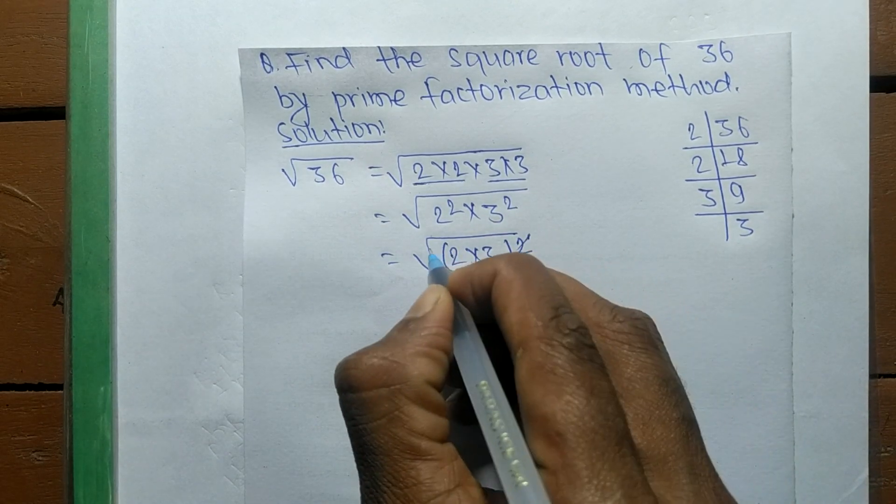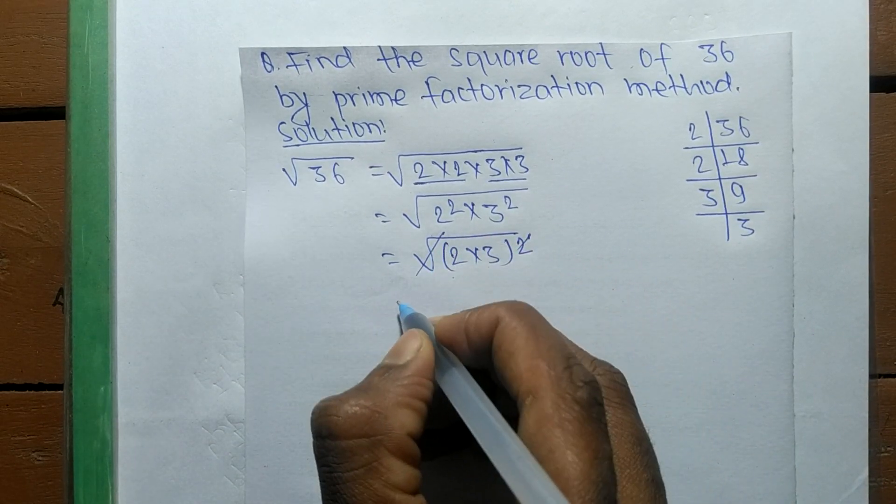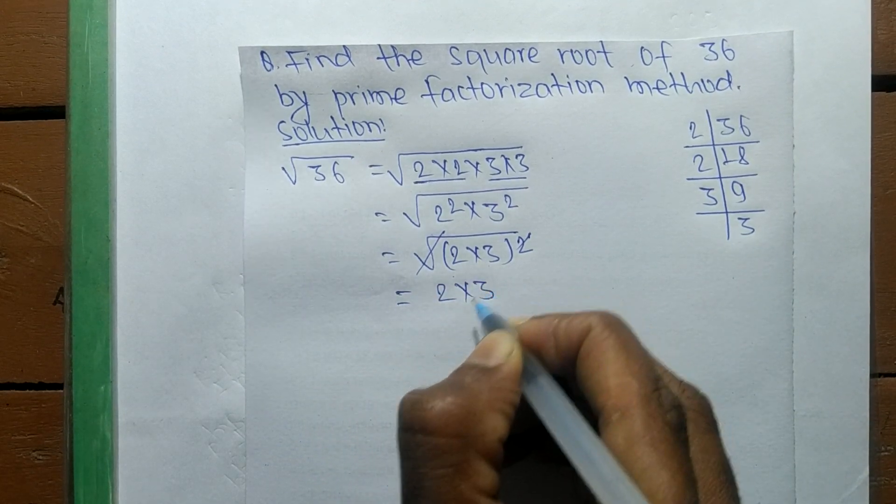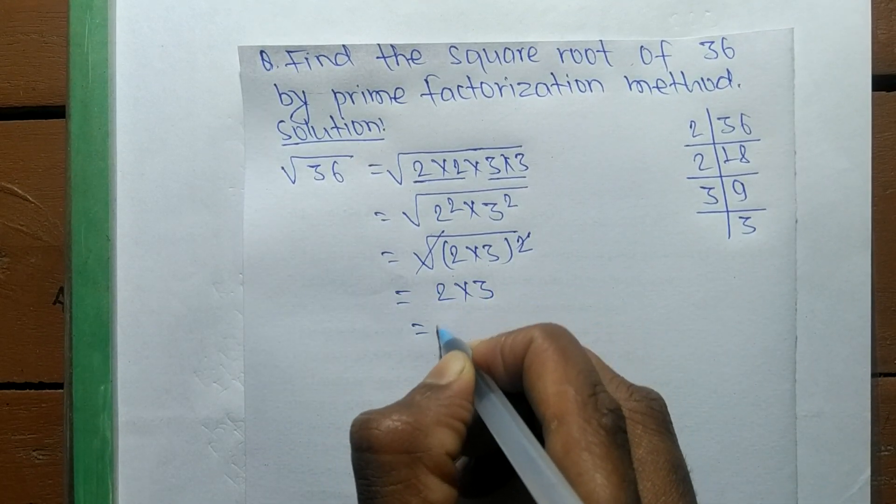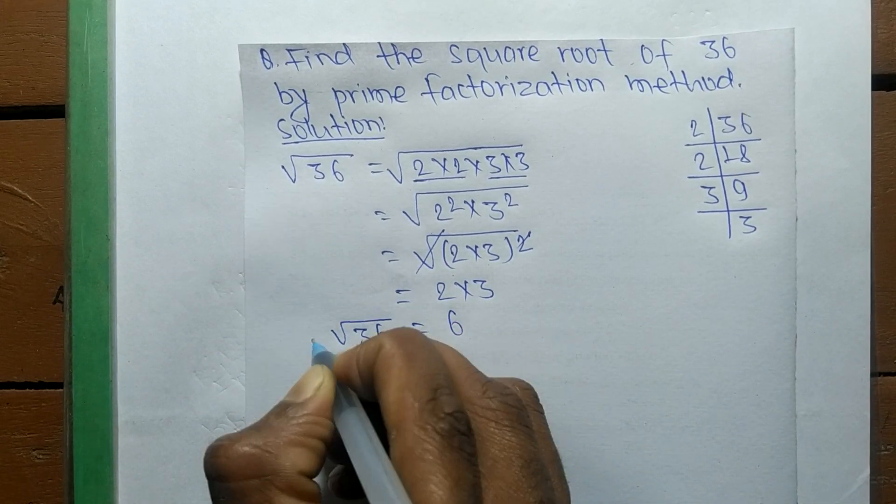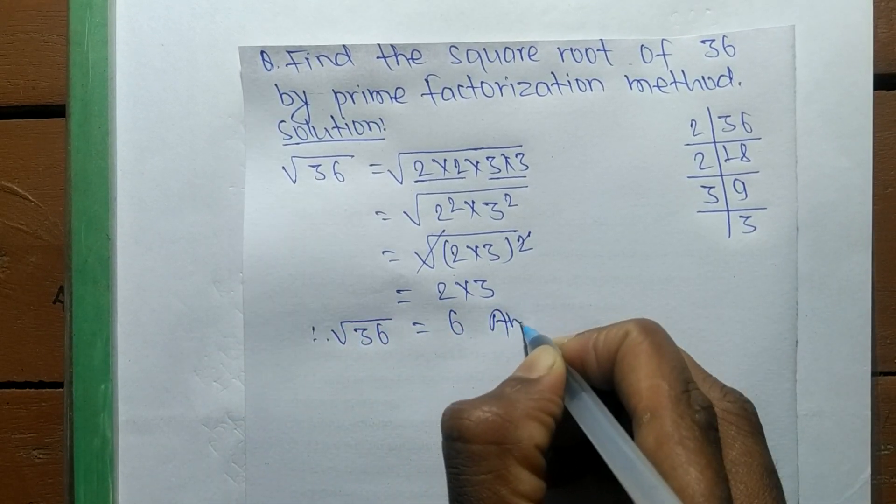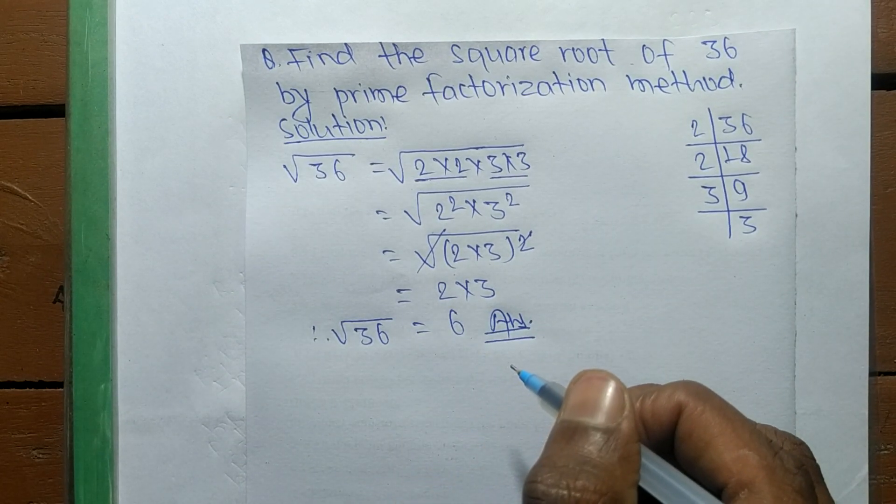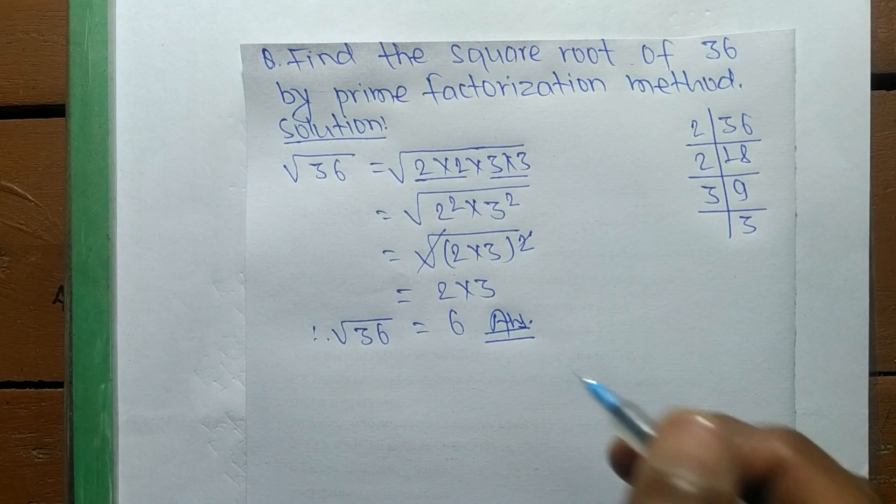So squared and square root cancel, and the numbers that come out are 2 into 3. So it is equal to 6. The square root of 36 is equal to 6. That's all for today, and thanks for watching.